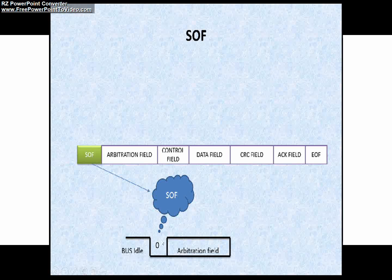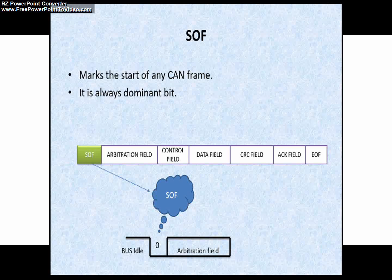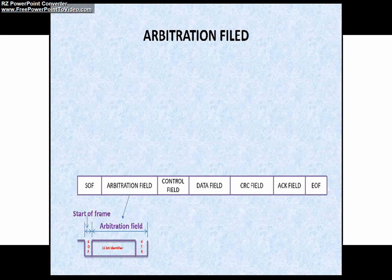So this is indicated as 0. I have just given a short note about the SOF, just go through this. The next field is Arbitration field. You can see in this picture, Arbitration field.